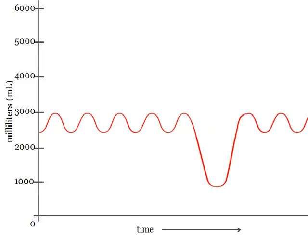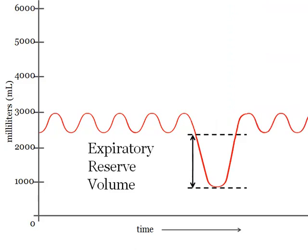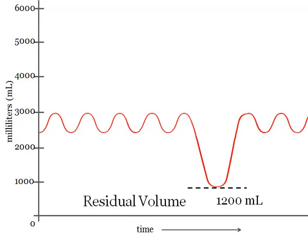Expiratory reserve volume is the amount of air you can breathe out beyond your normal exhale amount, which is about 1200 milliliters. Residual volume is the leftover amount of air in the lungs even after you blew out all the air that you could. That is also around 1200 milliliters.